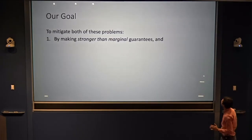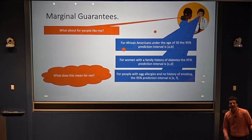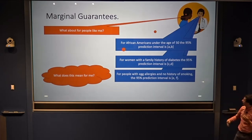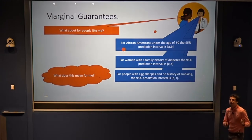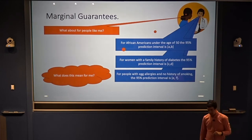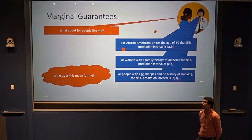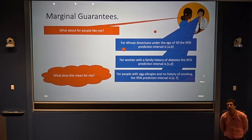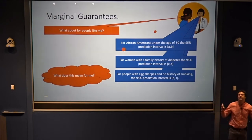Going back to our patient: the doctor gives this prediction interval, and the patient can interpret it as an average guarantee over everyone, or over African Americans under 50, or women with a family history of diabetes, or people with egg allergies and no history of smoking — and her interpretation is simultaneously correct for all of these. The groups do need to be defined ahead of time, but there can be truly a lot of them. In a medical application, throw in any group you think might be medically relevant — the cost for having lots of these groups will be very mild.